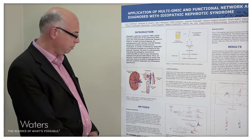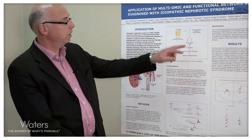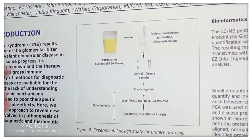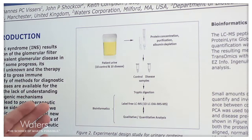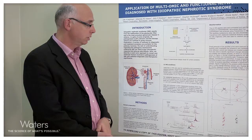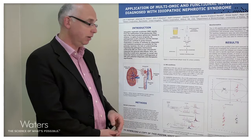The approach we took was to take 10 samples from young children with this disease and 10 control patients, and to use the sample preparation and experimental design shown here. We had patient urine — 10 controls and 10 disease samples. We used protein concentration and purification, depleting the urine of albumin, and then subjected each sample to tryptic digestion prior to analysis by a label-free LC-based approach. We also ran metabolite-based analysis of these samples so that we could correlate changes occurring both at the metabolite level and at the protein level.